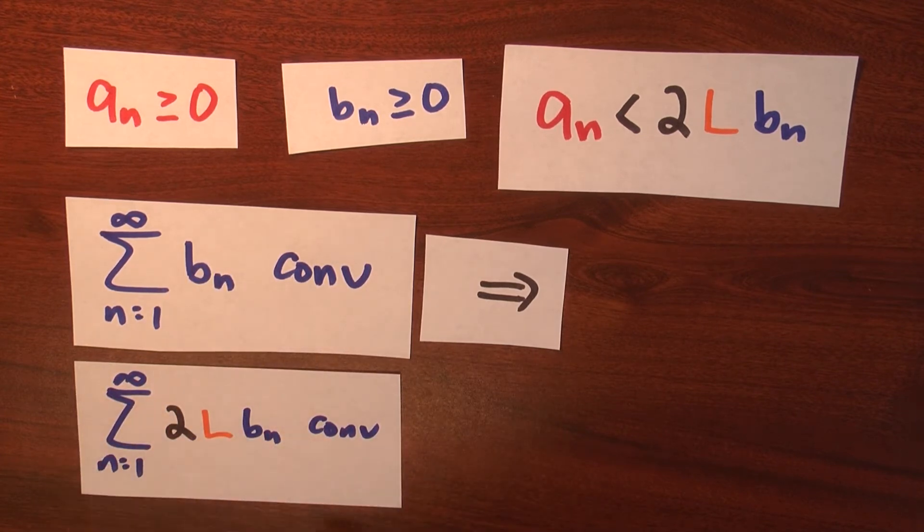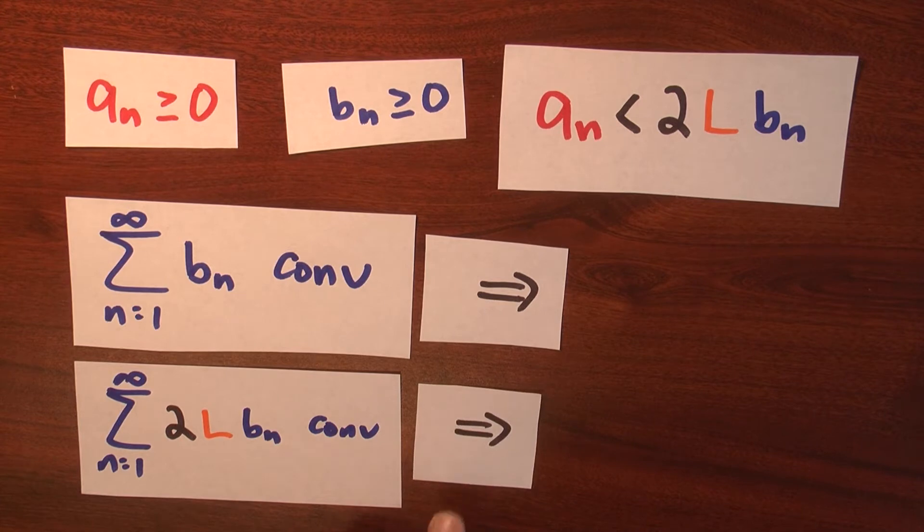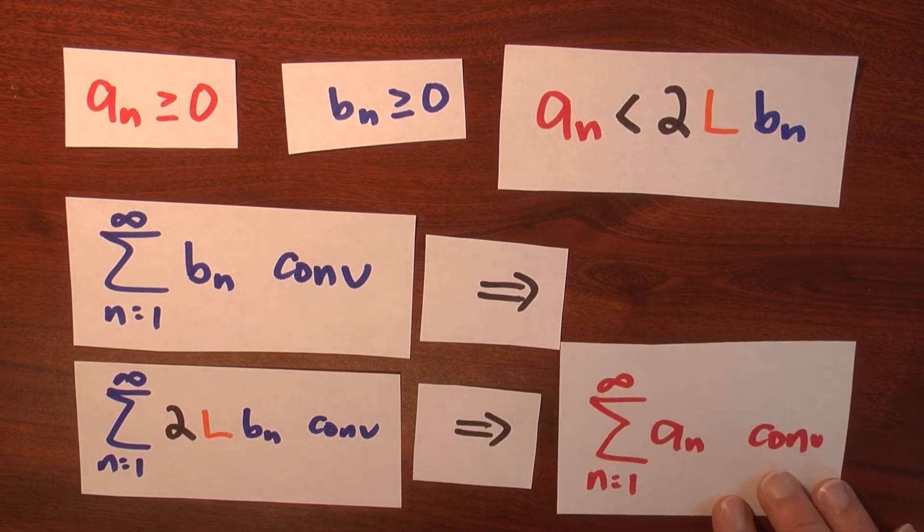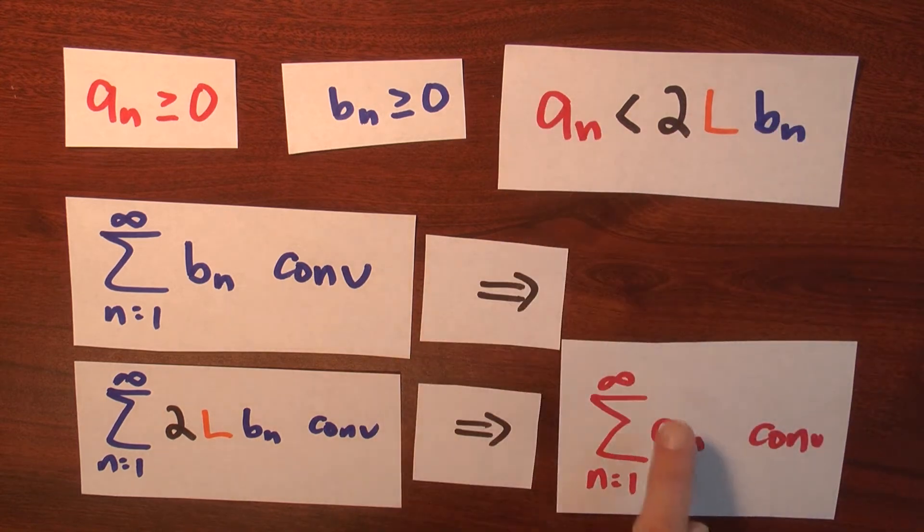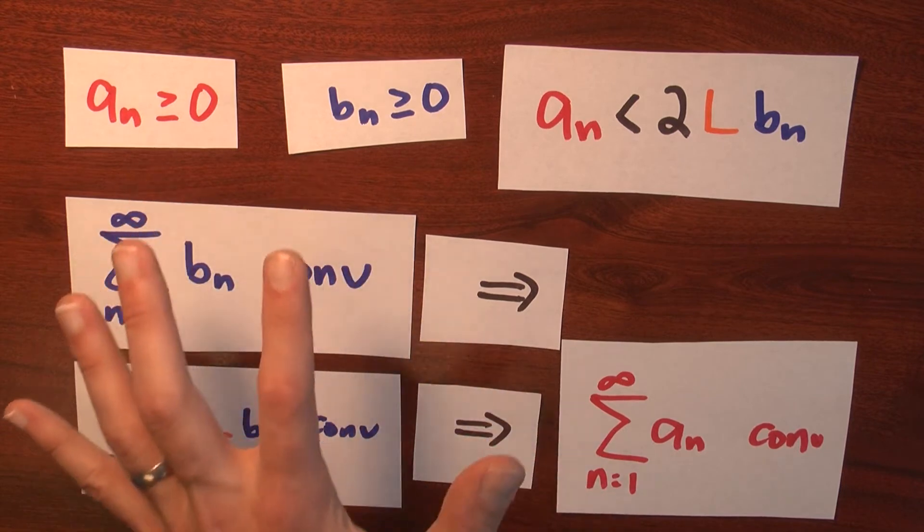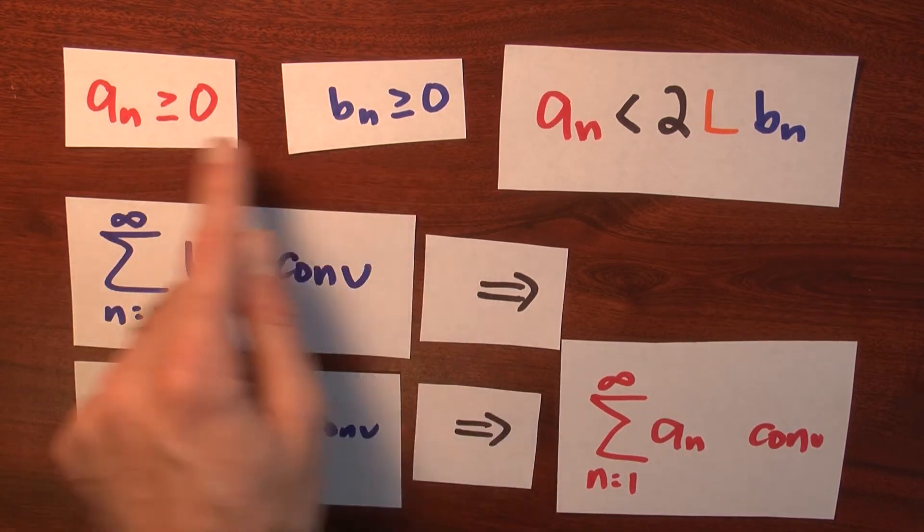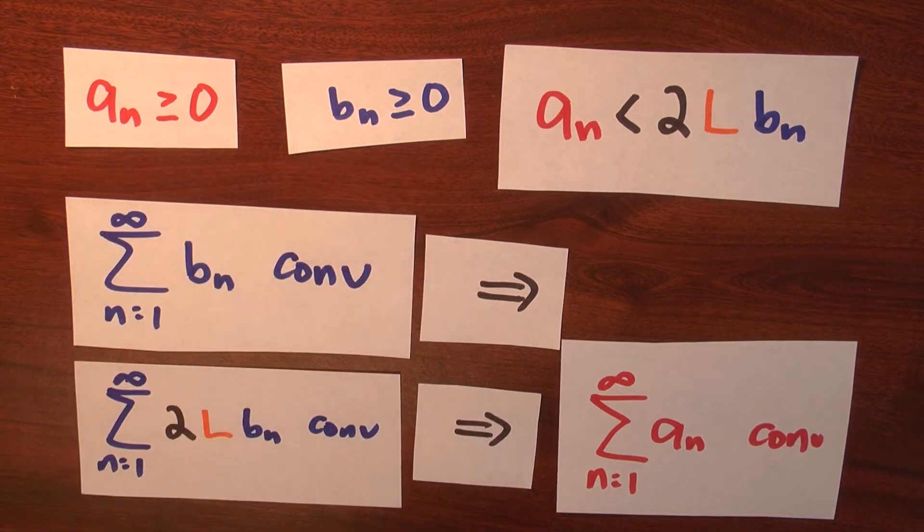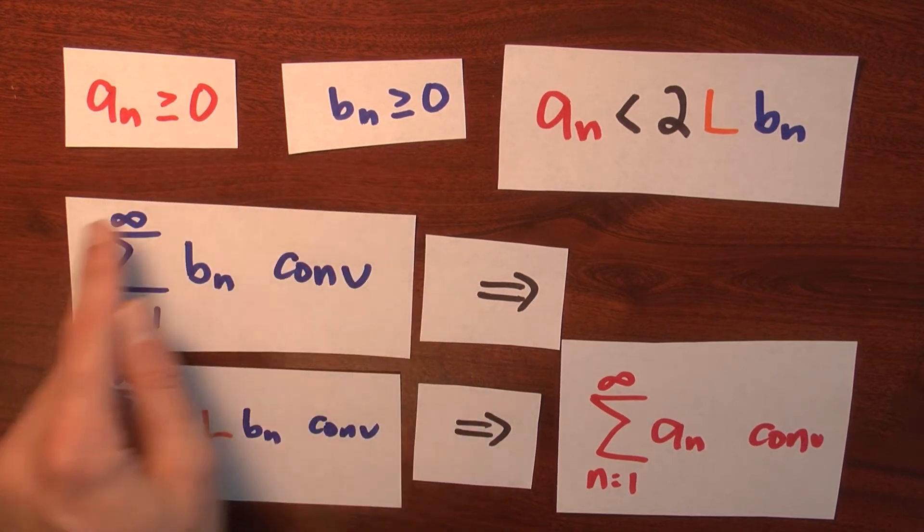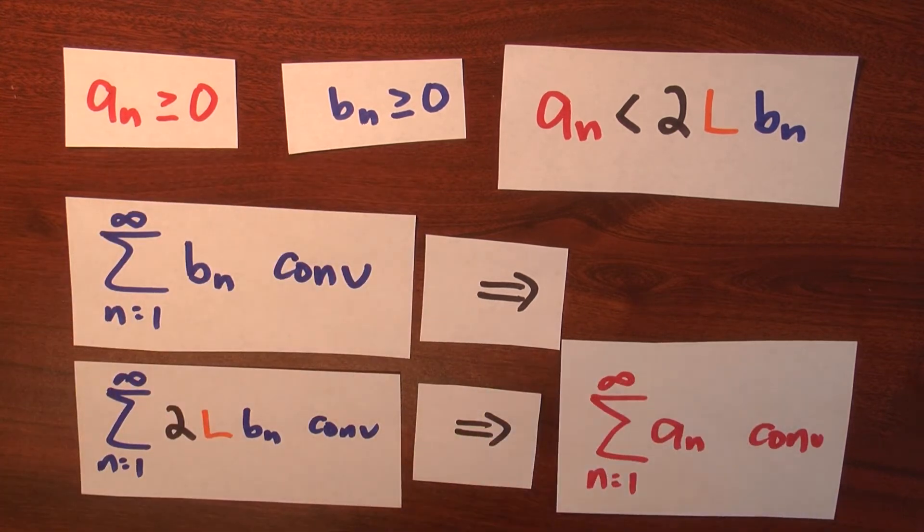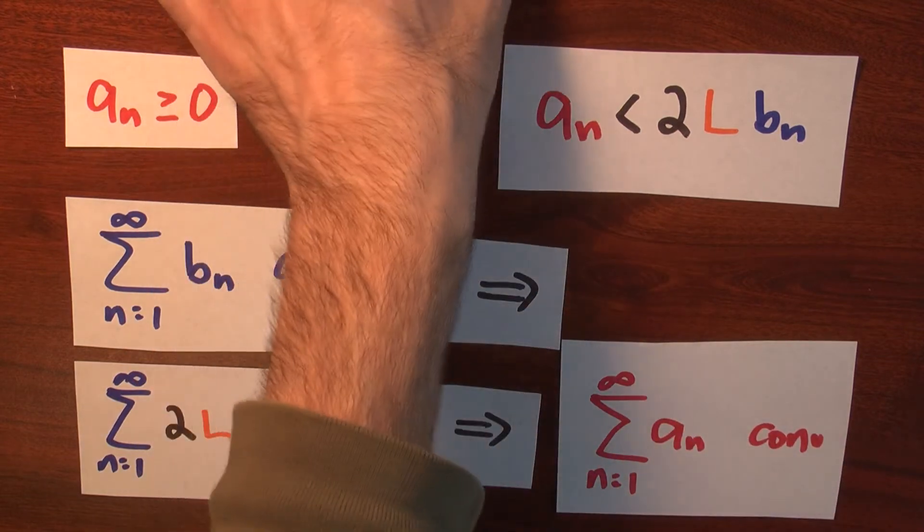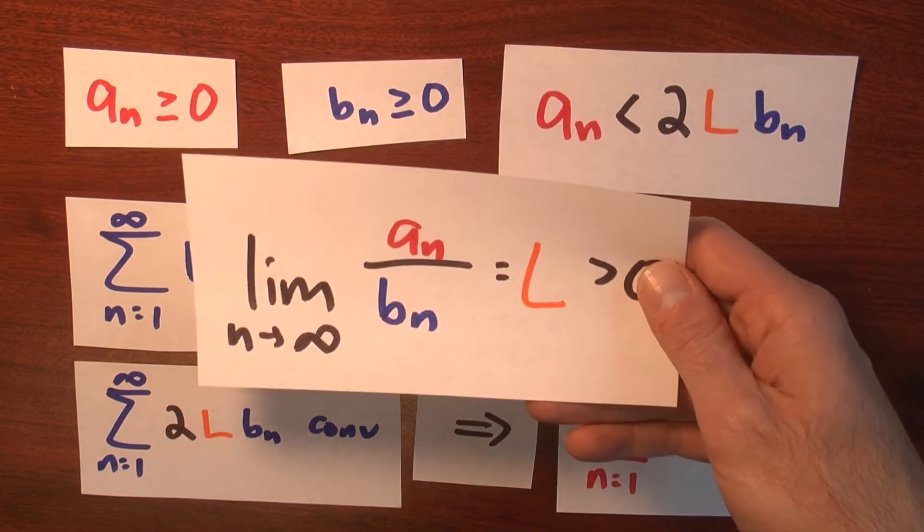So this statement then implies that this series, the sum of the a sub n's converges. Because this is bigger than a sub n, at least for large values of little n. So I'm getting a theorem that's telling me if I've got two series of non-negative terms, and this series converges, then this series converges, provided that this is true.